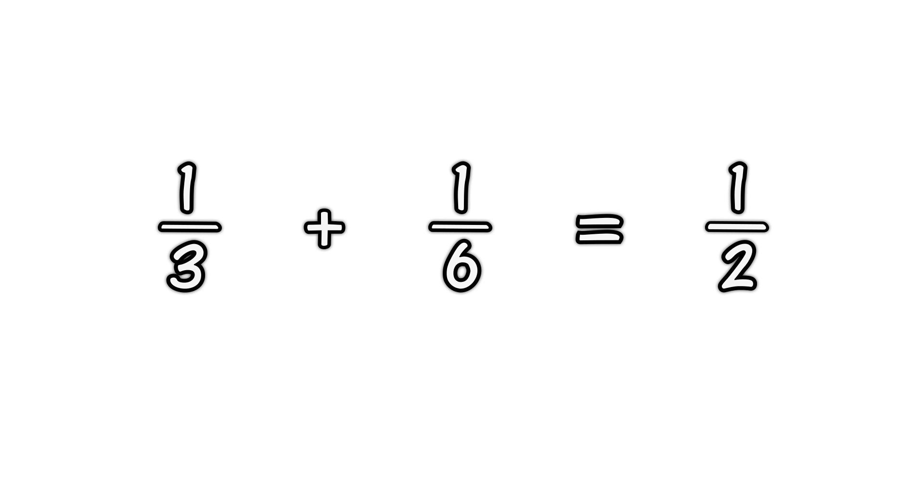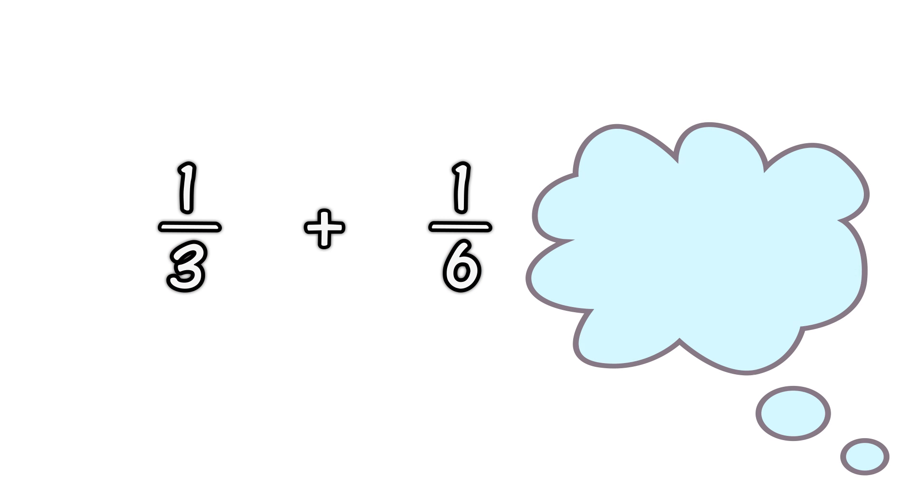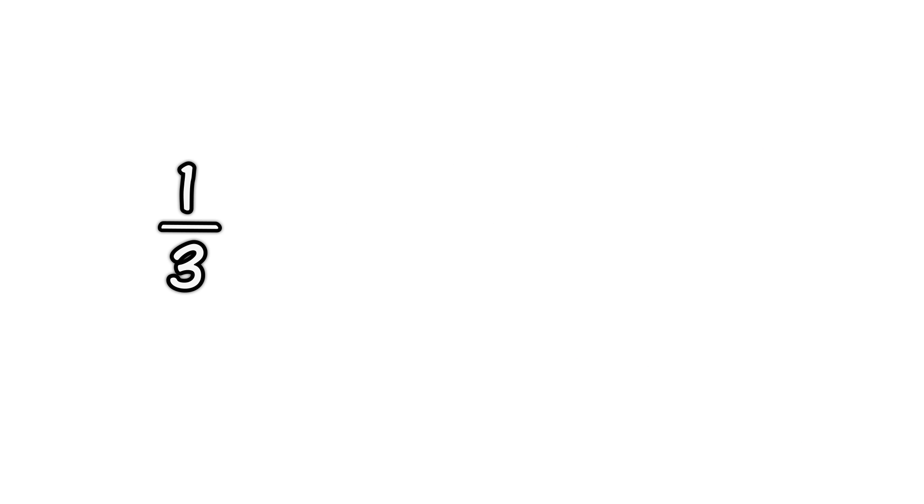The first thing is to make the bottom numbers, the denominators, the same. 6 is twice as big as 3. So to make the bottom numbers the same, we can multiply the top and bottom of the first fraction by 2, like this.